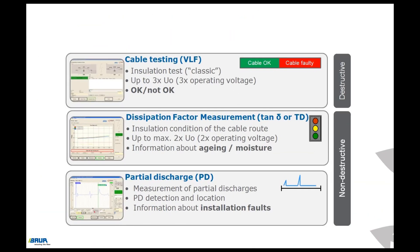To summarize all measurement methods and their most important functions: VLF cable testing provides information about whether the cable is okay and is used during commissioning of new or repaired cables for voltages up to 3×U0 — it is increasingly being replaced by the monitored withstand test. The TAN-delta measurement diagnoses the condition of the cable in terms of aging and moisture. PD testing locates partial discharges, uncovers installation faults, and provides initial information about the type of fault.